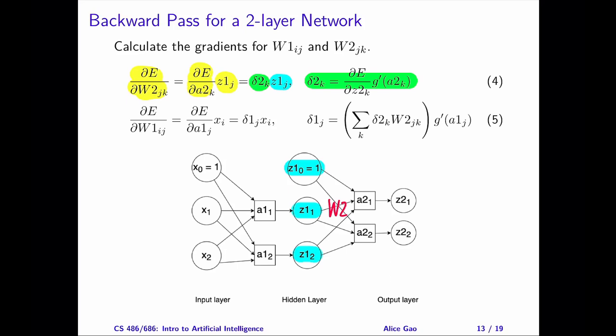Next, let's calculate the gradients for the weights w1. This expression is similar to that of w2. The gradient is a product of two terms: the partial derivative of e with respect to a1, and the second term is x. Similarly, I'll define the first term to be delta_1. The second term x is the input going into the edge for the weight w1. Note that the gradient for the weights in each layer has a similar expression — each expression is a product of two terms: the delta value and the input going into the weight.